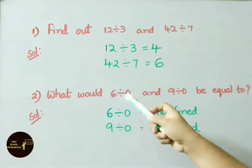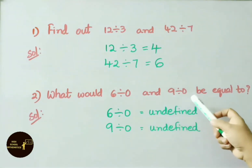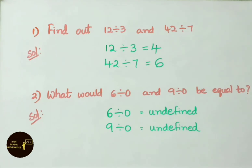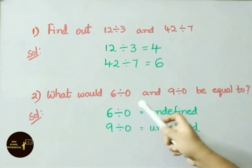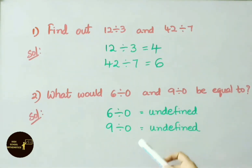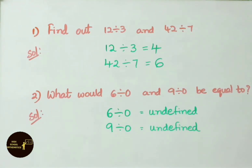What would 6 divided by 0 and 9 divided by 0 be equal to? Any number divided by 0 is undefined. Therefore, 6 divided by 0 and 9 divided by 0 both give the answer undefined.